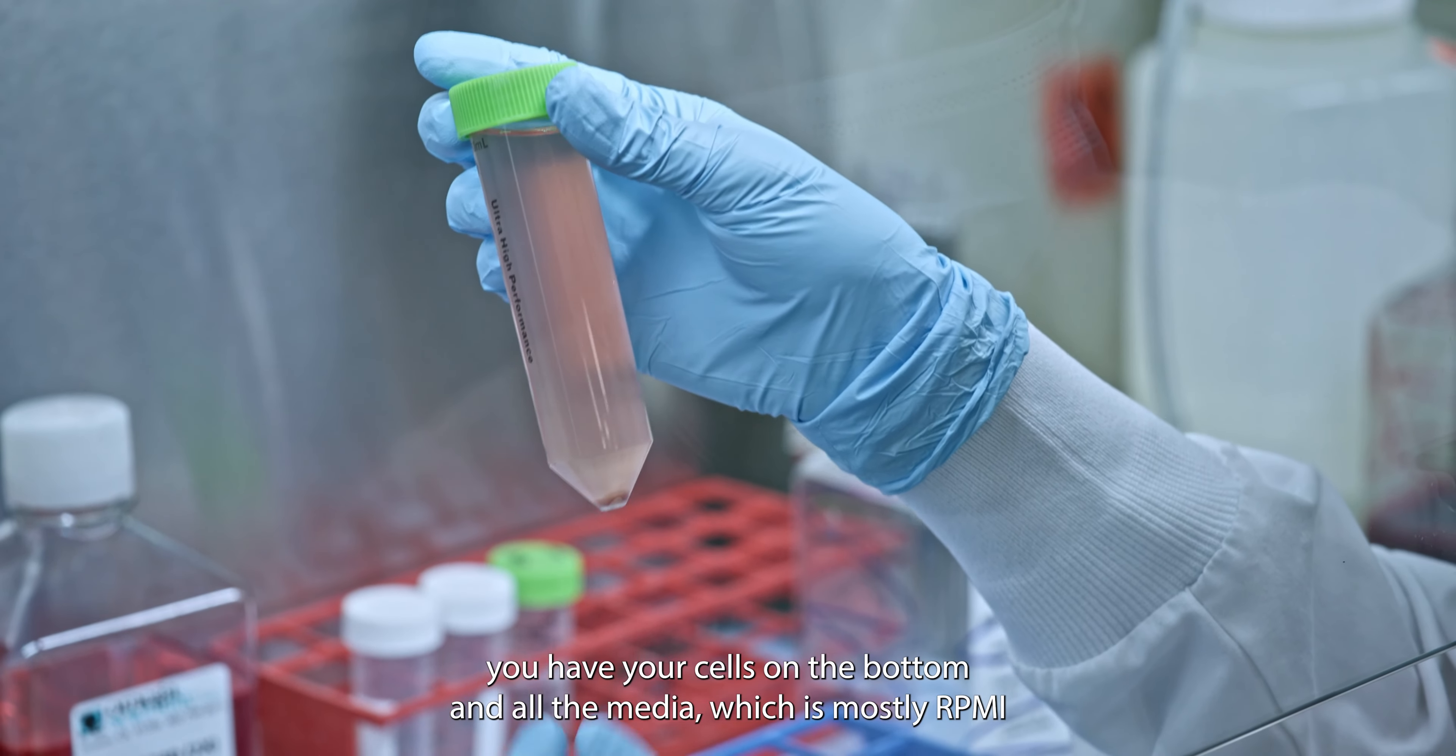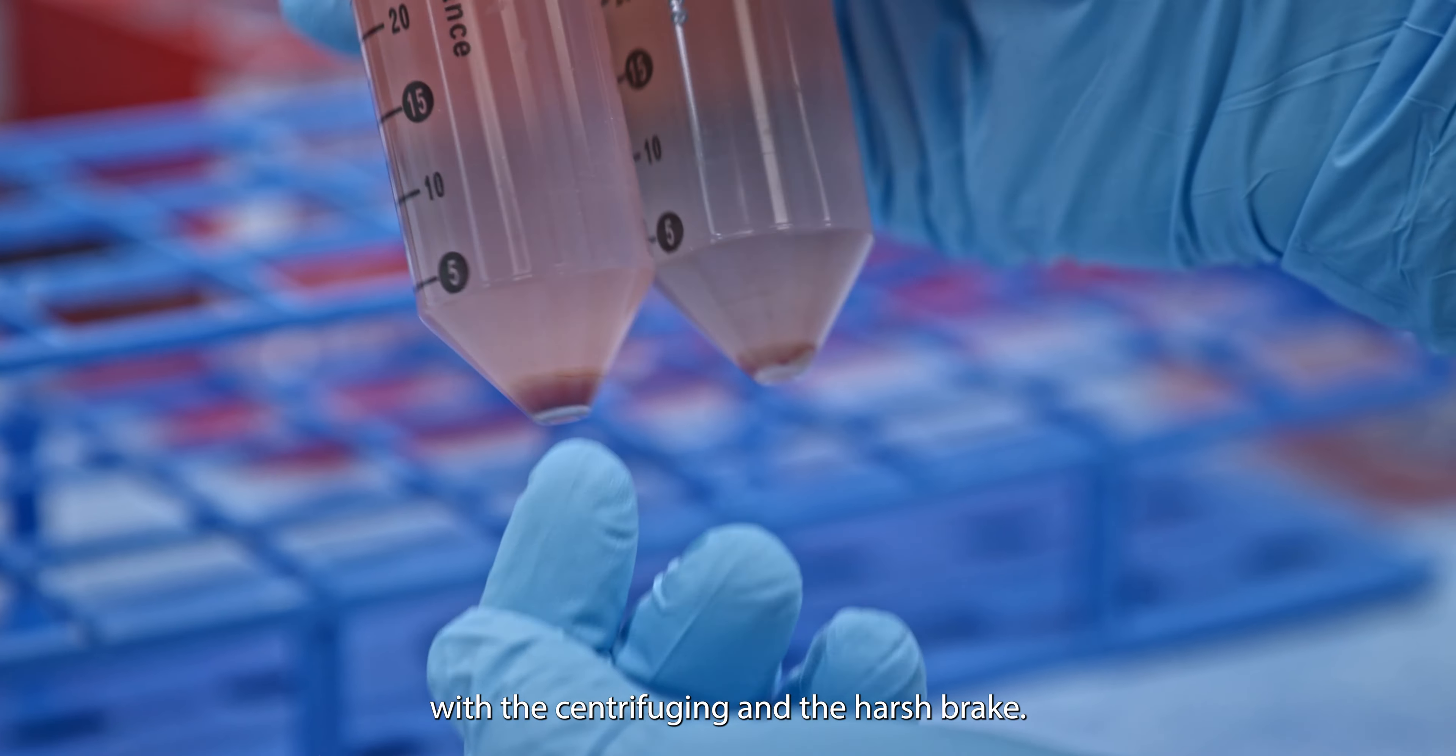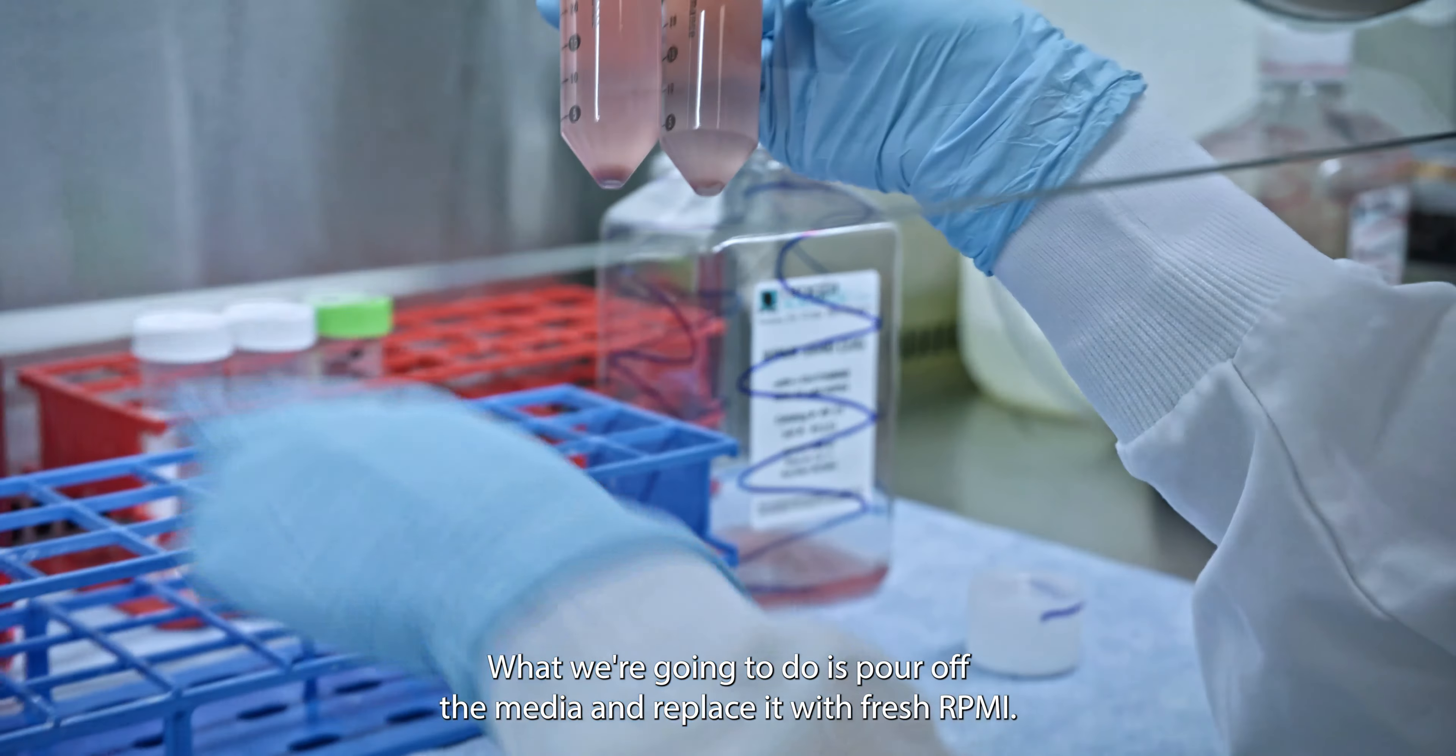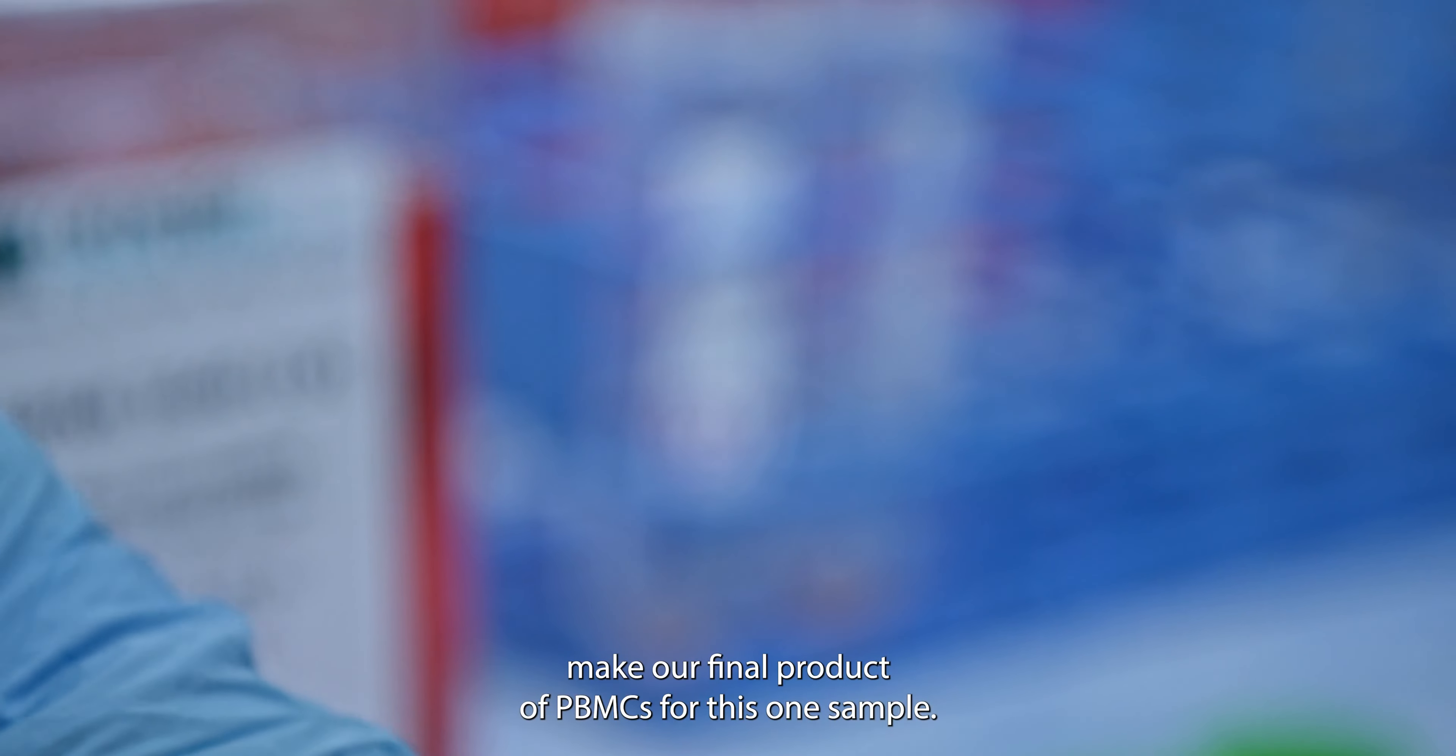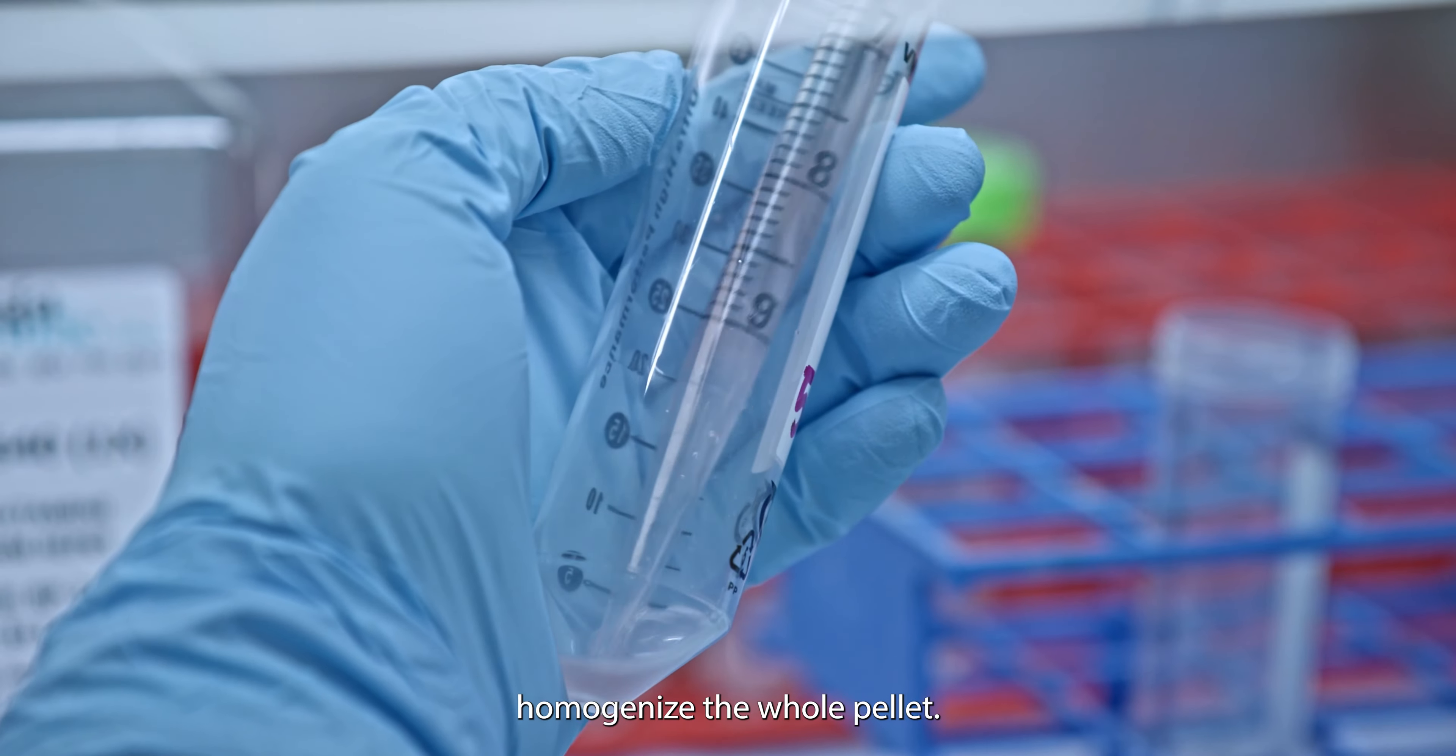After spin three, you have your cells on the bottom and all the media, which is mostly RPMI, but there's a bit of Ficoll. So this is coming off of spin three. We rinsed our cells and we pelleted them on the bottom with the centrifuging and the harsh breaks. So you can see all of our cells on the bottom here. And all this media is a mixture of RPMI and Ficoll. So what we're going to do is pour off the media and replace it with fresh RPMI. We're also going to combine the pellets into one, two to make our final product of PBMCs for this one sample. So all I do is directly shoot media at the bottom to loosen it up and keep going up and down just to homogenize the whole pellet.